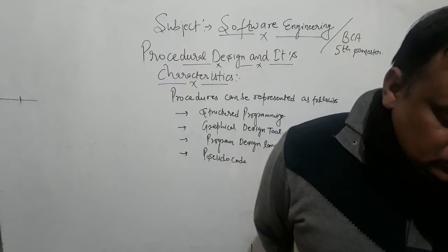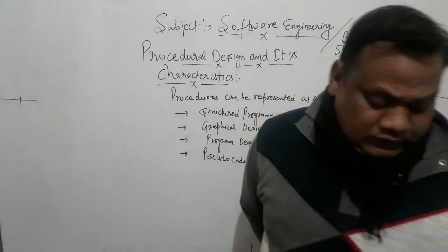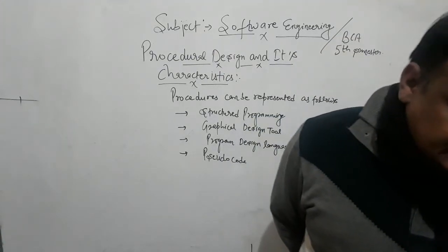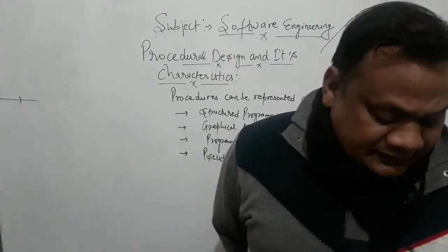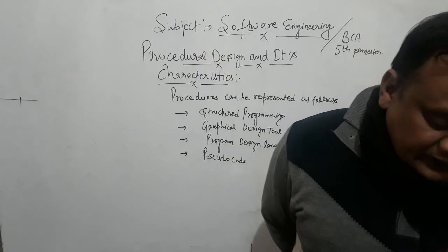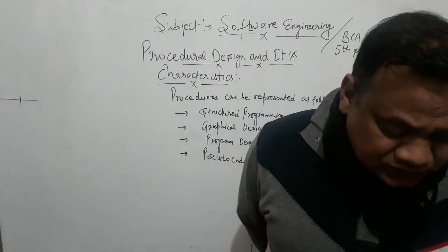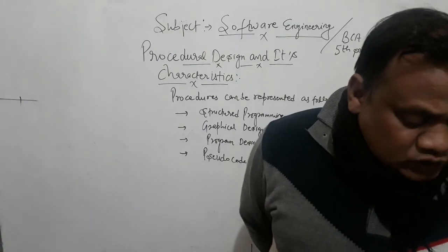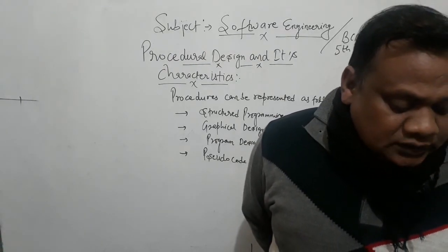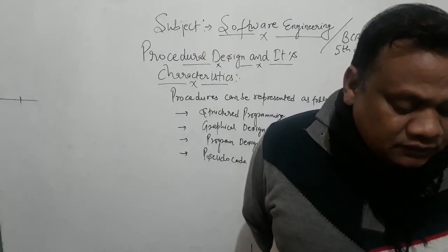So now in this lecture we have discussed procedure design: what are the characteristics, what are the advantages, and what are the disadvantages. We have discussed all of this in the context of BCA 5th semester Software Engineering.